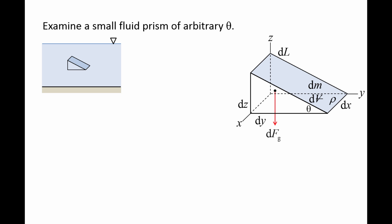The gravitational force, dFg, acts in the negative z direction, and pressure forces act normal to the surfaces. dF1 acts on the left side, dF2 acts on the top side, and dF3 acts on the bottom side.